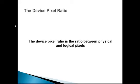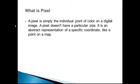Dear students, in this lecture we shall discuss about the device pixel ratio. The device pixel ratio is the ratio between physical and logical pixel. Before discussing physical and logical pixel, we need to understand what a pixel is. A pixel is simply the individual point of color on a digital image. A pixel does not have a particular size; it is an abstract representation of a specific coordinate, like a point on a map.